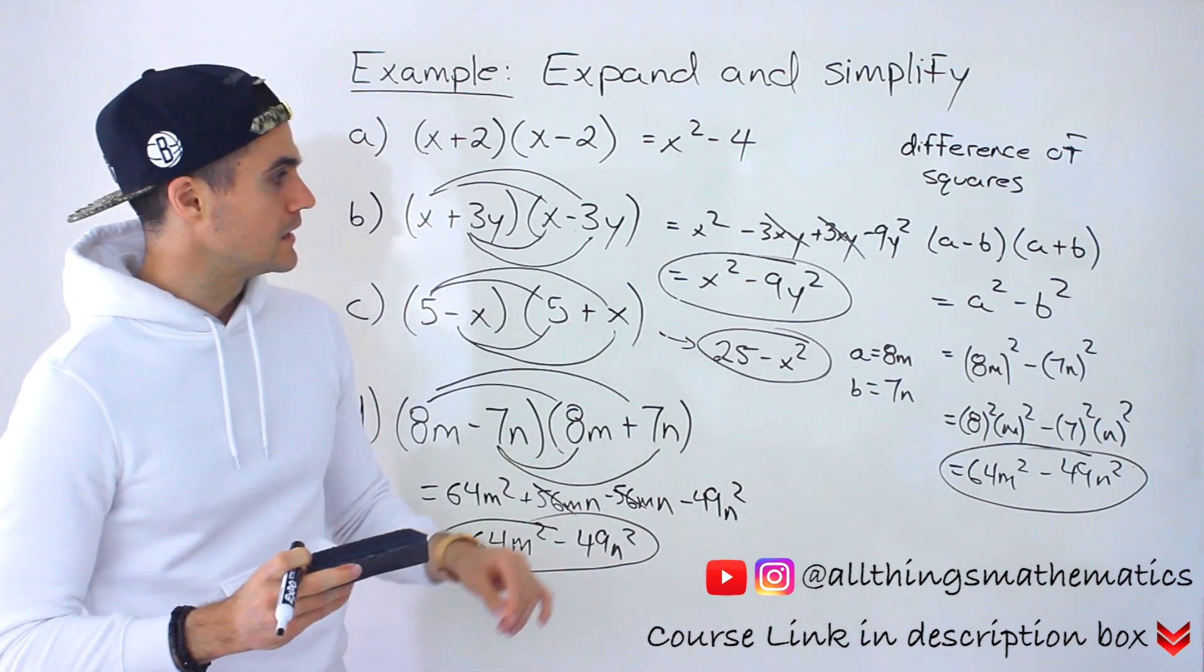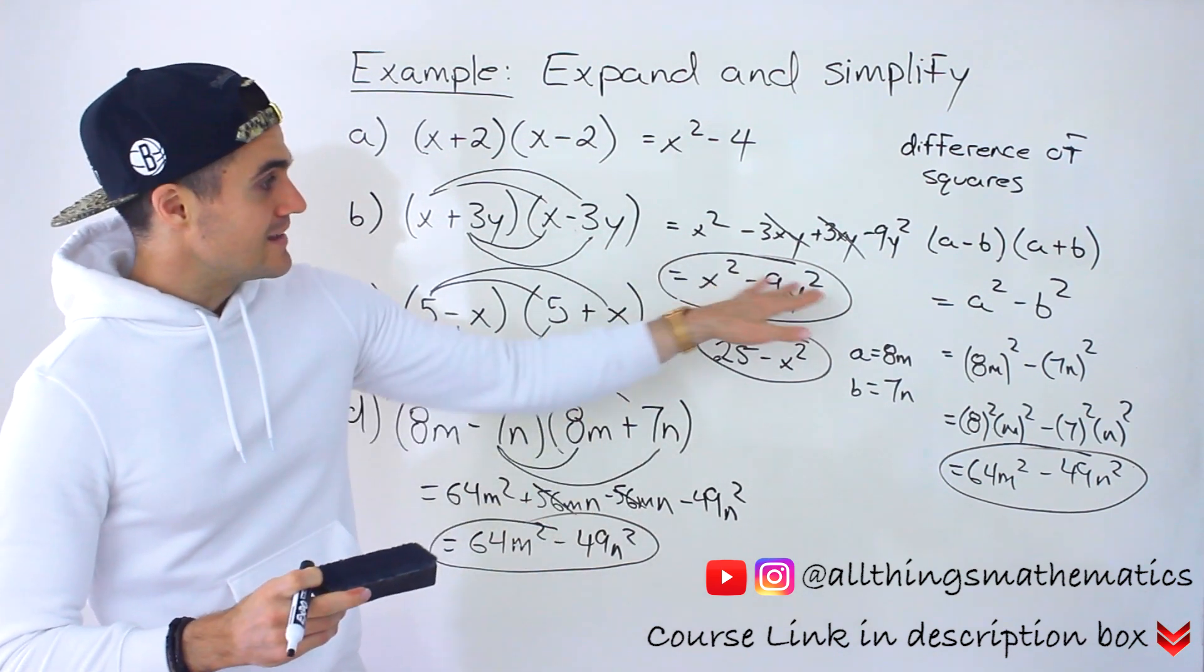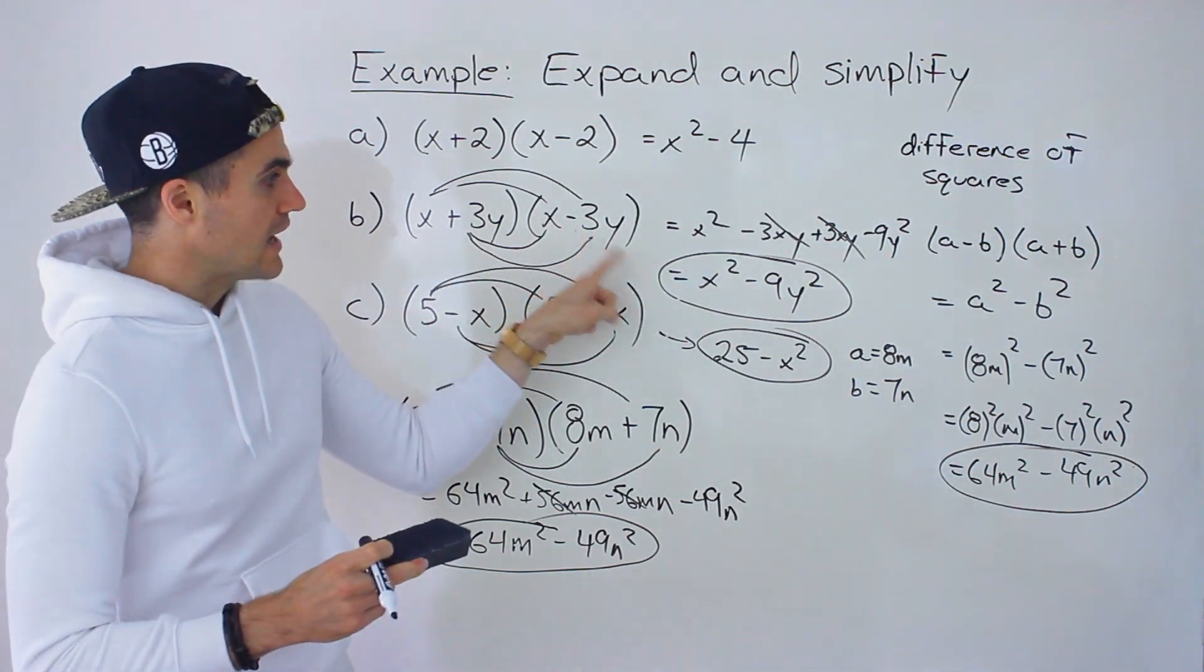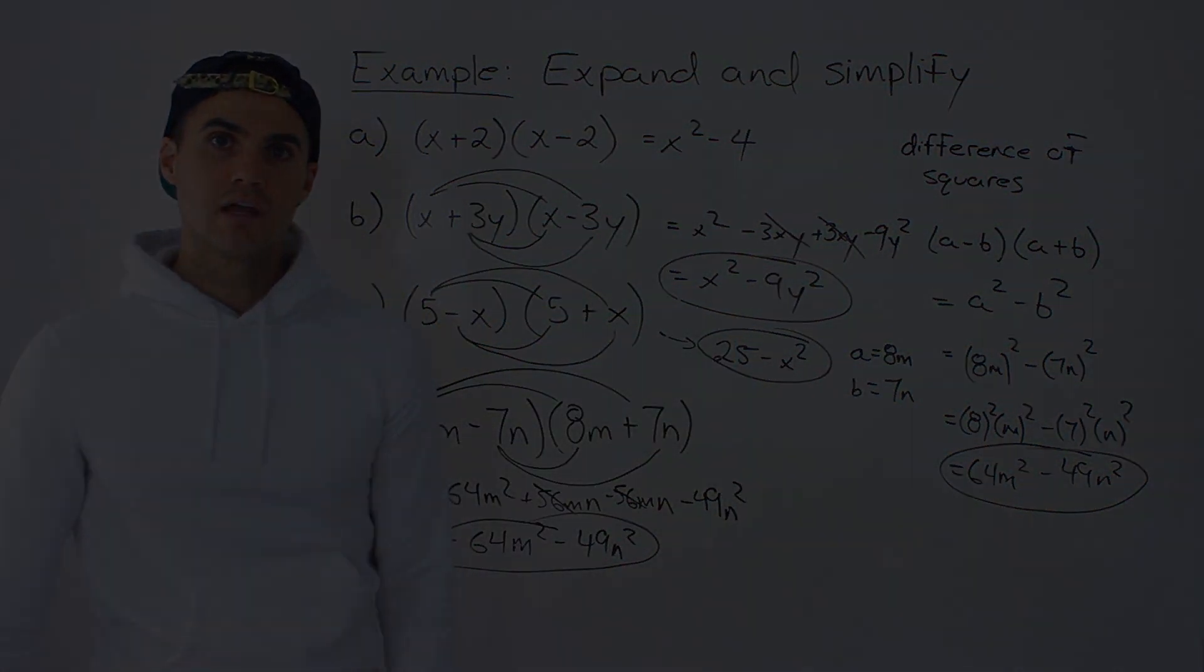And it's actually not always going to be quadratics because you can have multiple variables. Basically, the product, the final product that you're going to get is going to be in this kind of format where you're just basically multiplying the ends and then there's a negative in between.